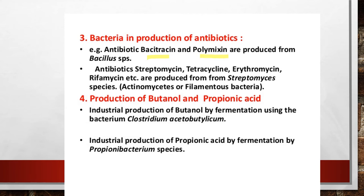Antibiotics like bacitracin and polymyxin are produced by Bacillus species. Antibiotics like streptomycin, tetracycline, erythromycin, and rifampicin are produced from bacteria like Streptomyces species. Industrial products like butanol are produced by fermentation using certain bacteria called Clostridium acetobutylicum. Propionic acid is also formed by fermentation using another bacterial species called Propionobacterium species.